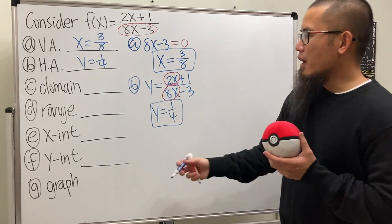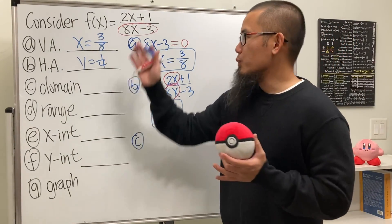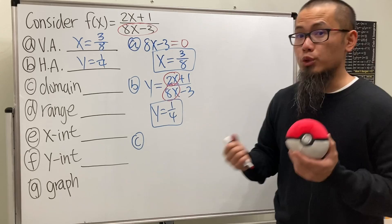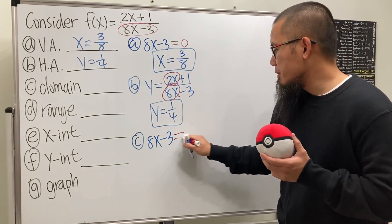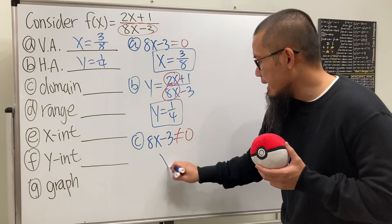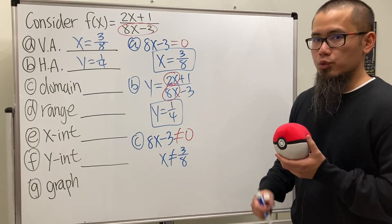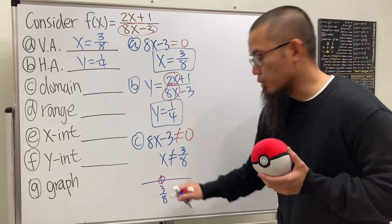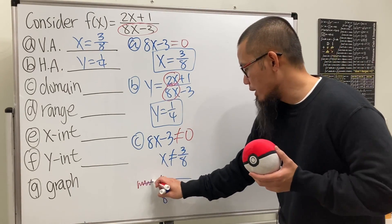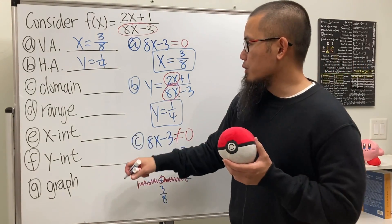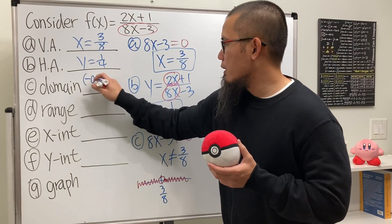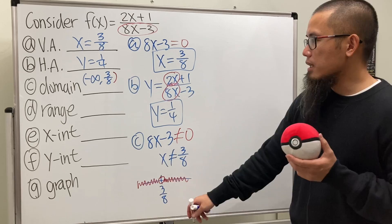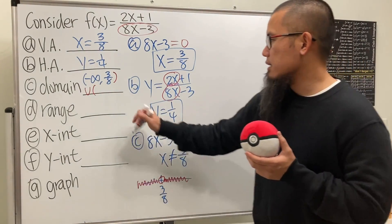For the domain, we cannot reduce anything so nothing too tricky. Make the denominator not equal zero — 8x minus 3 cannot equal zero, meaning x cannot be equal to 3 over 8. In interval notation, we go from negative infinity to 3 over 8 with a parenthesis, union 3 over 8 to infinity with a parenthesis, since we do not want to include 3 over 8.